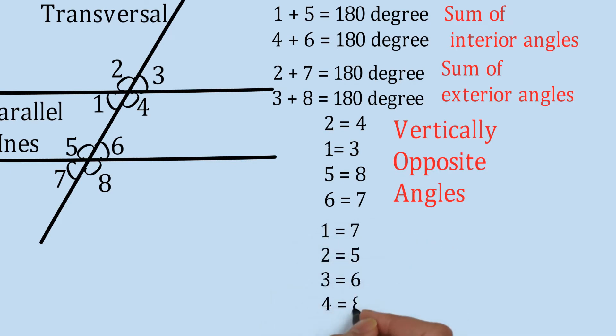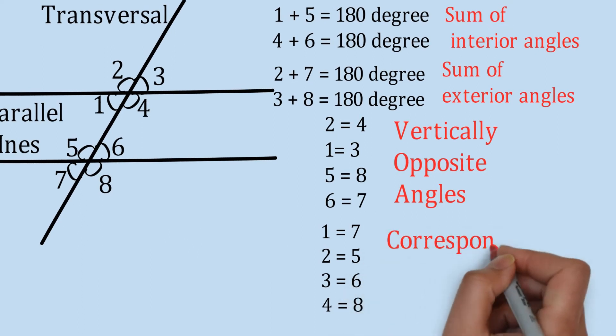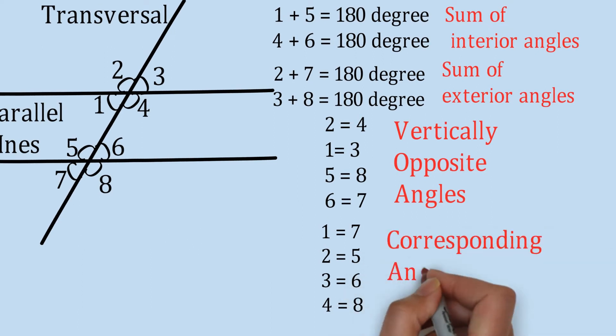Then we have angle 1 equal to angle 7, angle 2 equal to angle 5, angle 3 equal to angle 6, and angle 4 equal to angle 8. Why? Because these are the corresponding angles. The corresponding angles are also equal to each other.